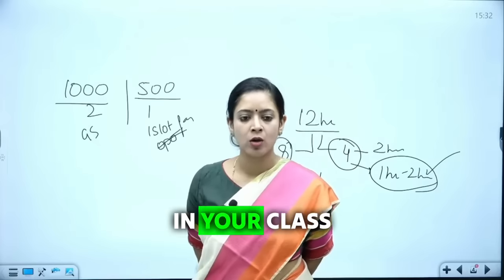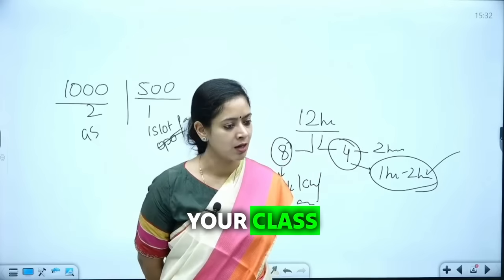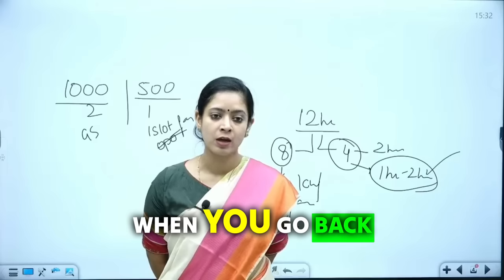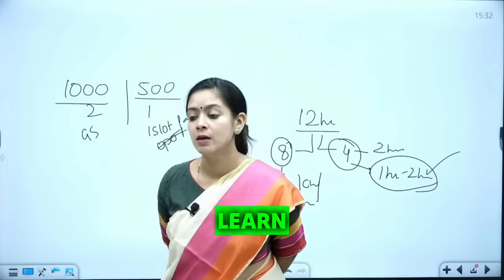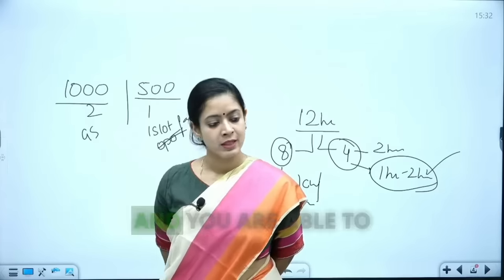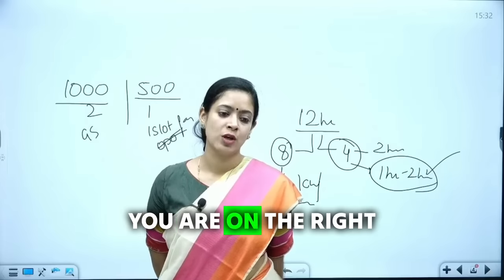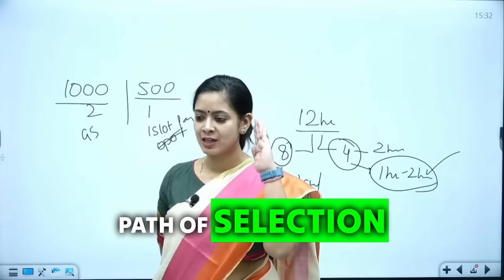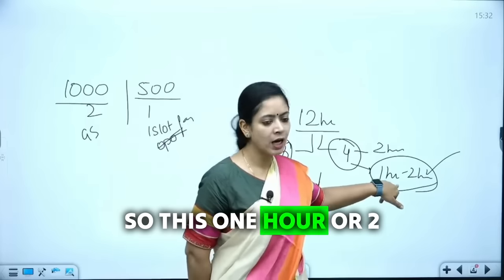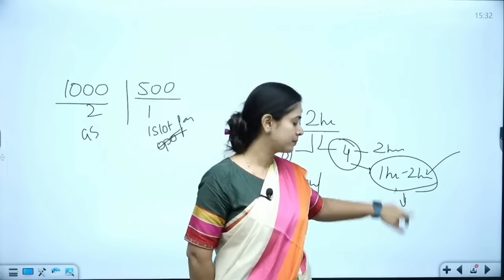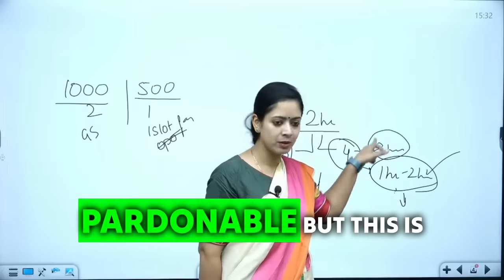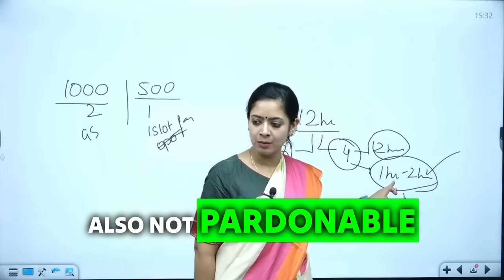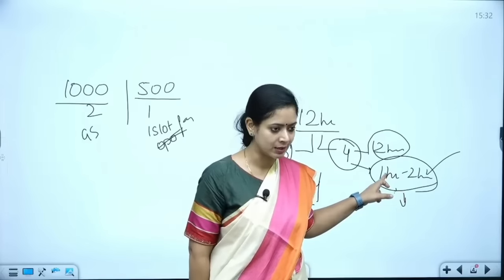Things you have written in your class. Things you have read in your class. When you go back, revise, learn and you are able to write it. Then you are on the right path of selection. So this 1 hour or 2 hours are not pardonable. This is also not pardonable. But this is also not pardonable. You can't leave it.